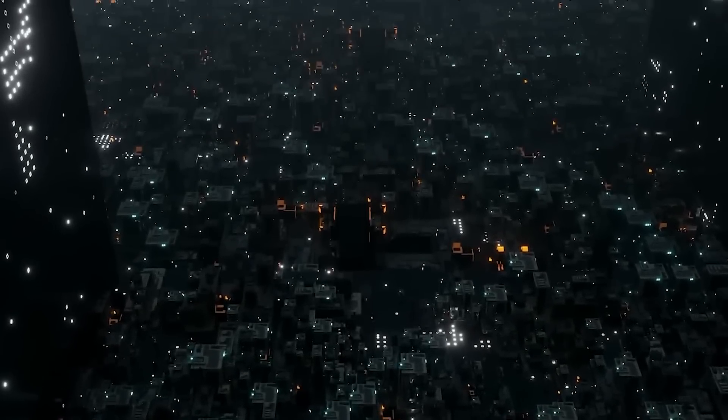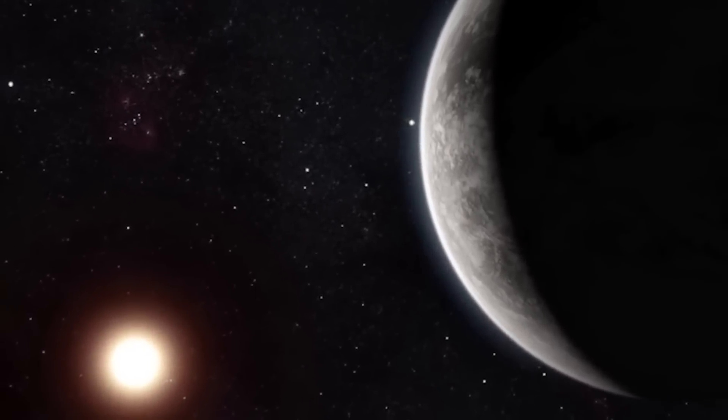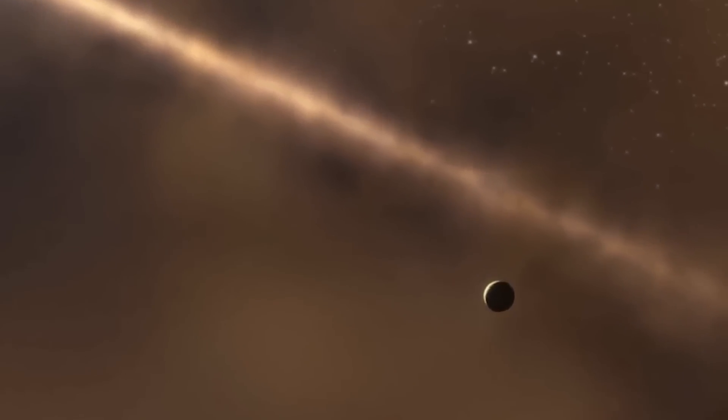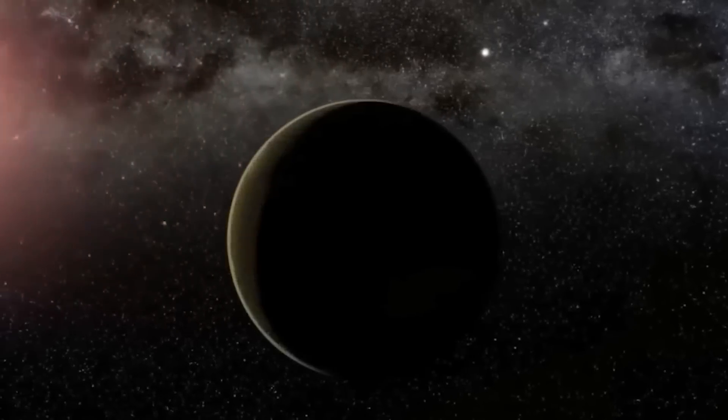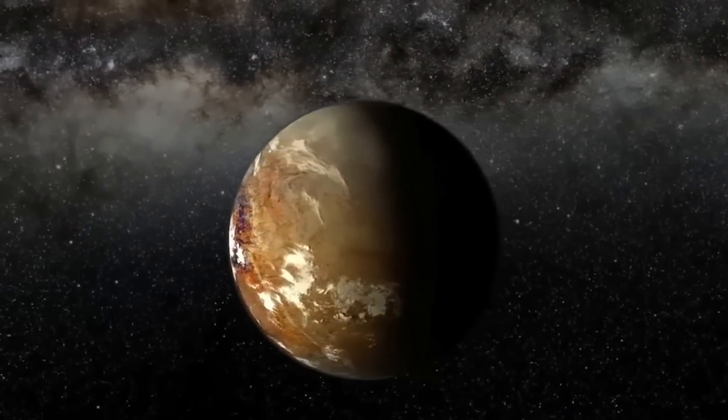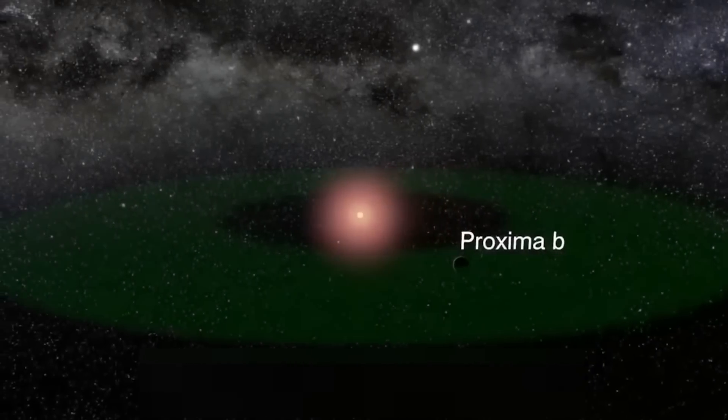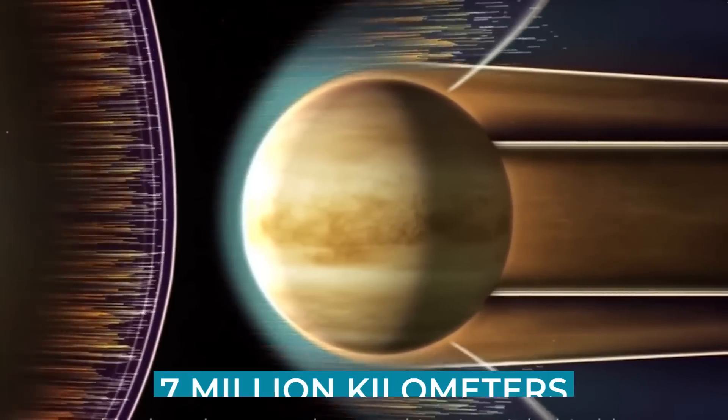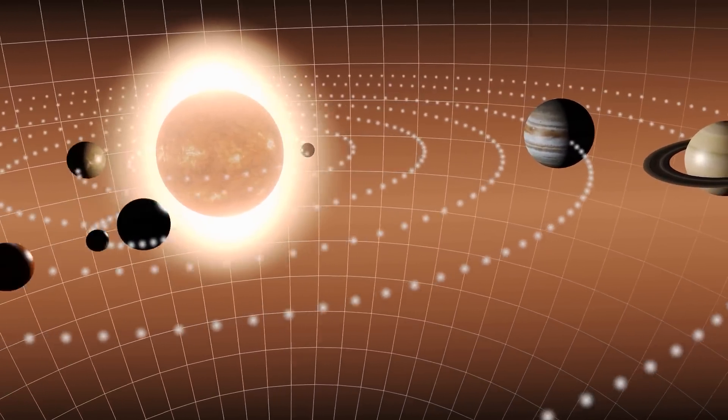Proxima b is considered a potential host for a civilization, as it is located in the habitable zone of its star, Proxima Centauri, which is an M-class red dwarf star that is only 12% the mass of our sun. Proxima b is more massive than our planet, with a mass of 1.6 Earth masses and a radius of 1.3 times that of Earth. It orbits Proxima Centauri in just 11.2 days, covering a distance of 7 million kilometers, which is less than 5% of the distance at which Earth orbits the sun.